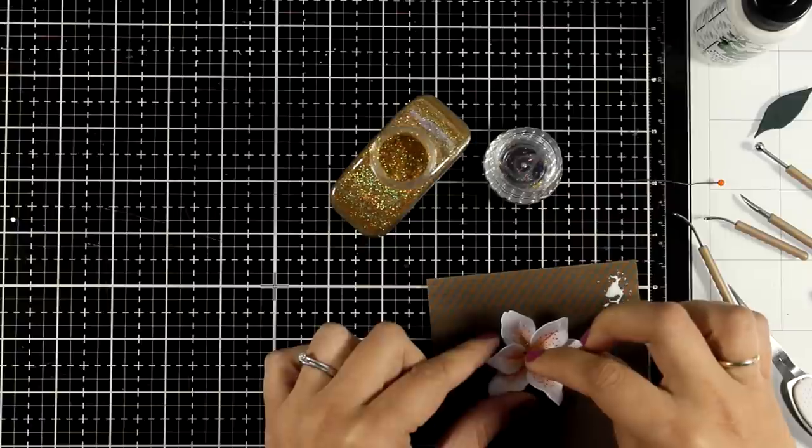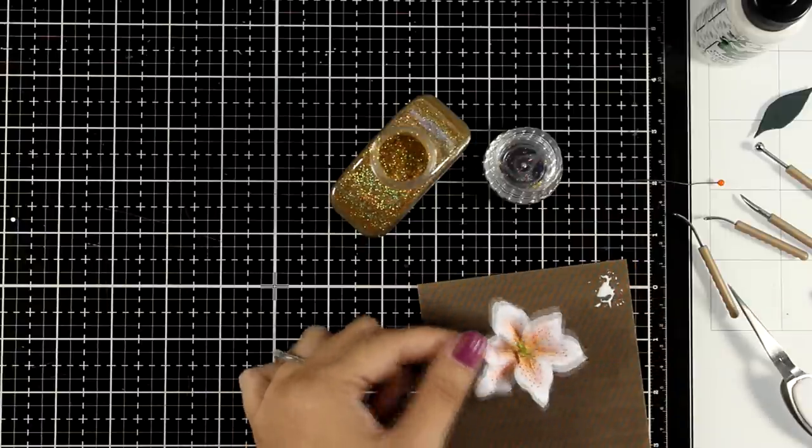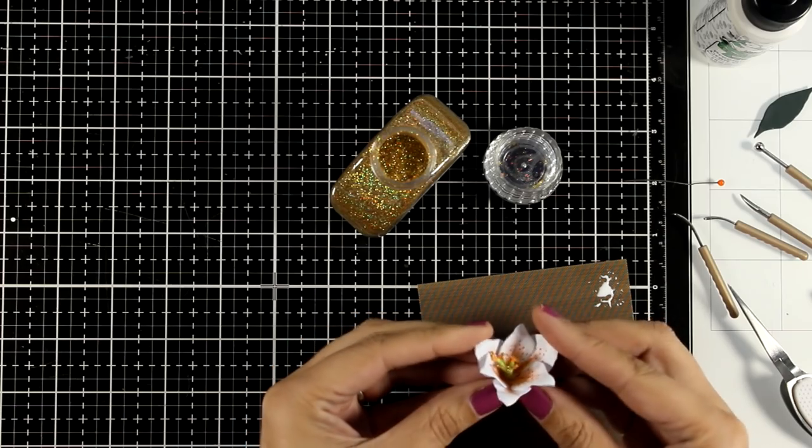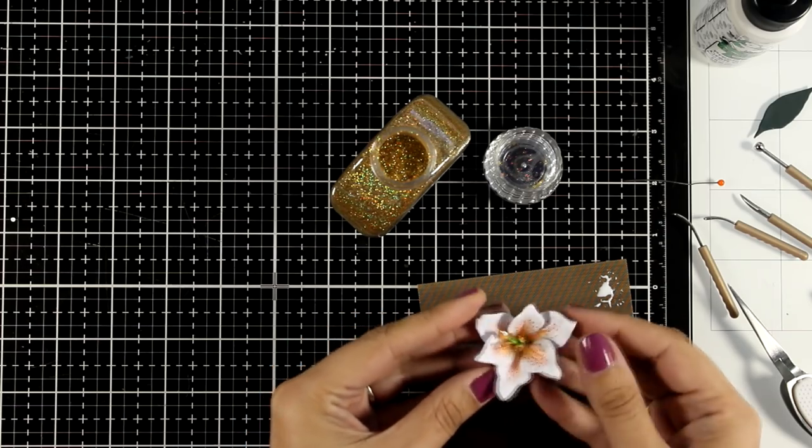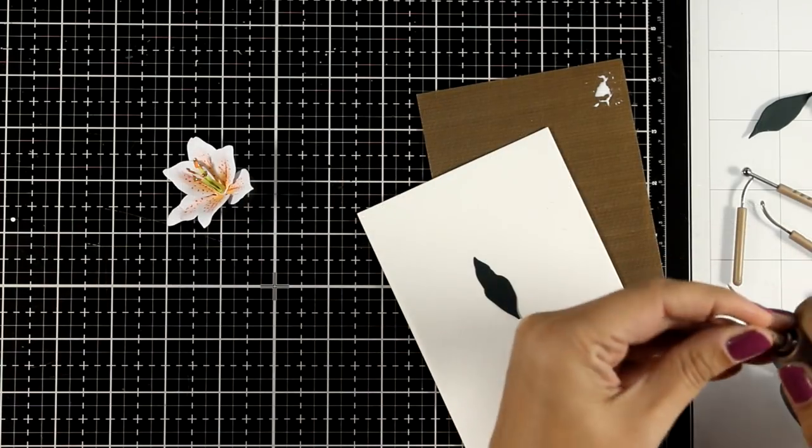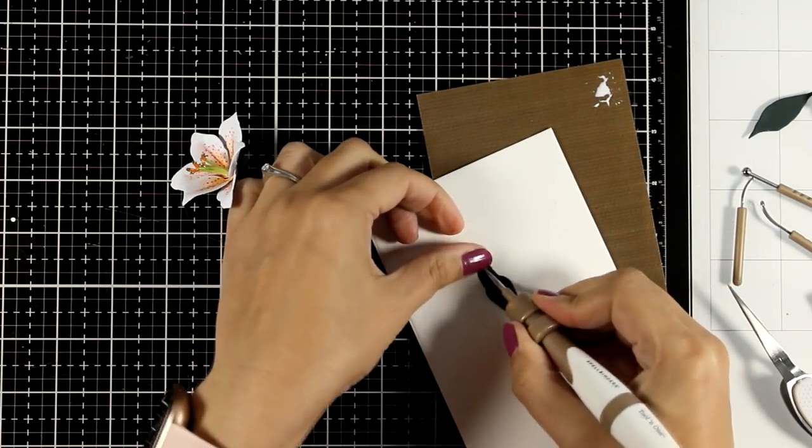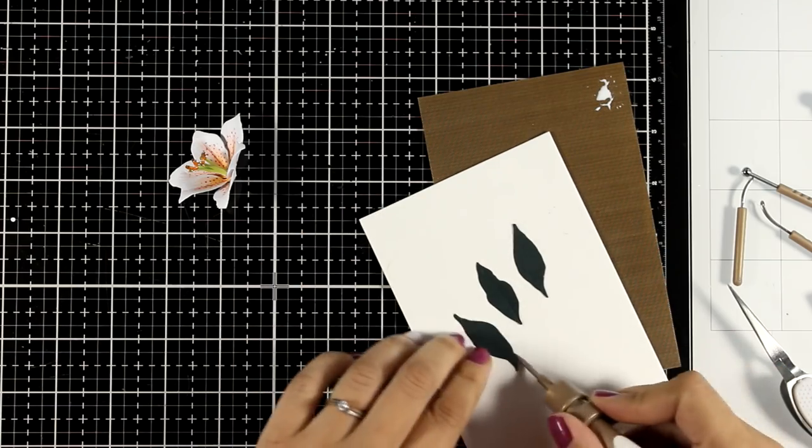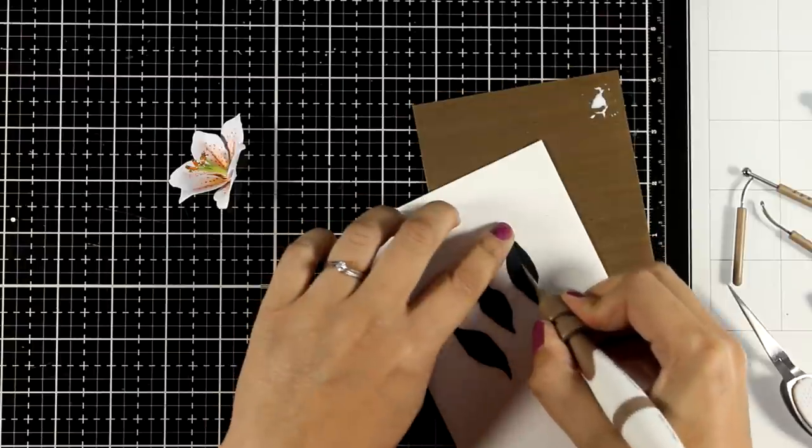Now I repeated this process to create two more identical flowers. And now let's move on to the leaves and let's see what I did for them. They are really easy to put together and add some dimension.